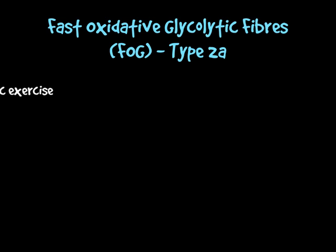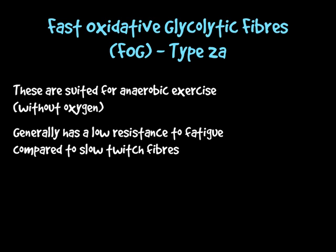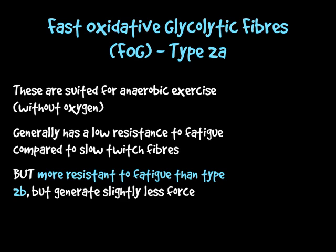The FOG fibres, type 2A, are a little different — they're suited to anaerobic exercise, where you don't require oxygen, so something quite quick that doesn't require big gulps of oxygen to keep the body moving. They have a low resistance to fatigue compared to slow twitch fibres, so they don't last as long, however they last longer than type 2B fibres. So type 2A has more endurance qualities than type 2B, but neither compares to slow twitch fibres. Type 2A fibres also generate slightly less force, so they're not as powerful as type 2B.